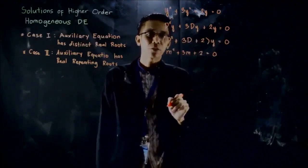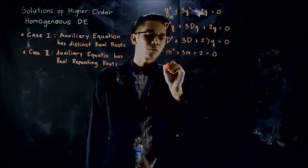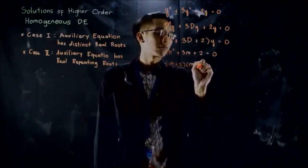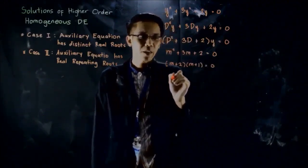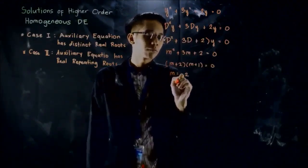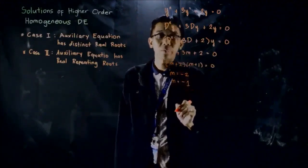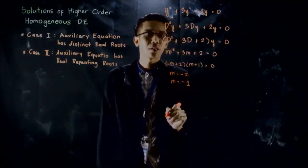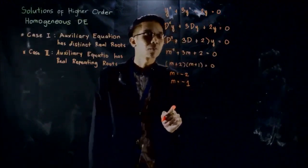We can factor and solve for the values of m. By factoring, we get (m plus 2)(m plus 1) equals 0, giving us m equals negative 2 and m equals negative 1. We say the given differential equation is Case 1 because the roots of the auxiliary equation are both real numbers and none of them repeats.